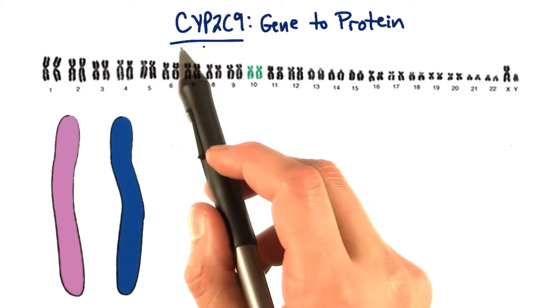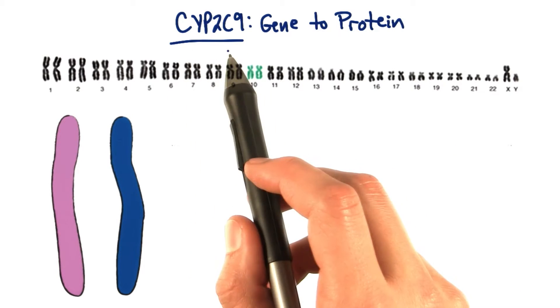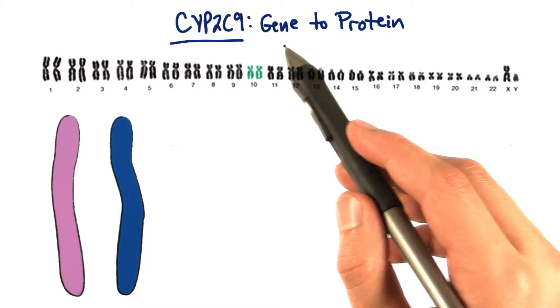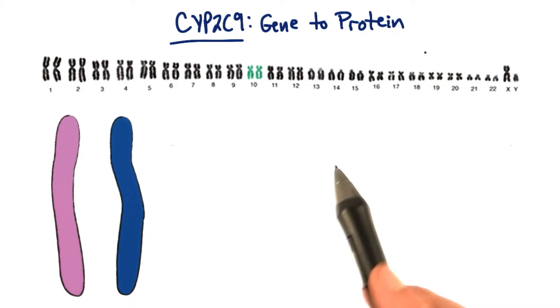CYP2C9 is important in the pharmacokinetic pathway of warfarin. Let's learn a bit more about how it goes from gene to protein.